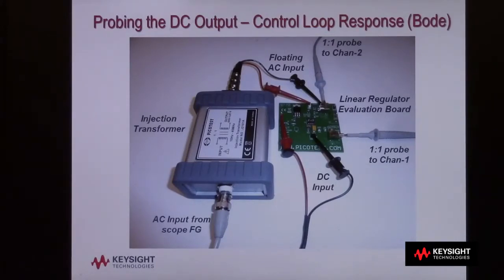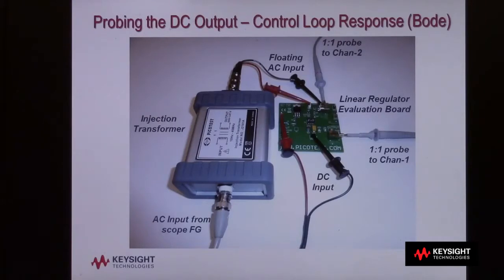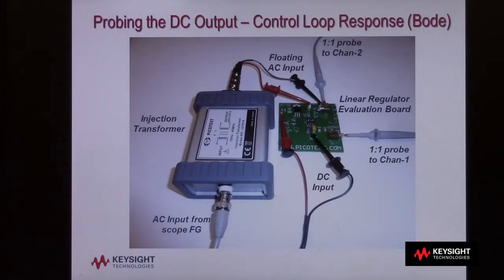At the bottom of this photo, you can see the BNC cable from the scope's waveform generator output connected to the input of the injection transformer. The output of the injection transformer, which is now isolated, is connected across the 5-ohm injection resistor. Proper probing is very critical. We've got to use one-to-one probes to get maximum sensitivity out of our scope to measure very low-level AC signals, and we've got to use very good probing ground techniques so that we don't pick up noise or interference. I'm using solder-in probe sockets rather than standard ground leads, which really act like antennas when you're attempting to measure very low-level signals.